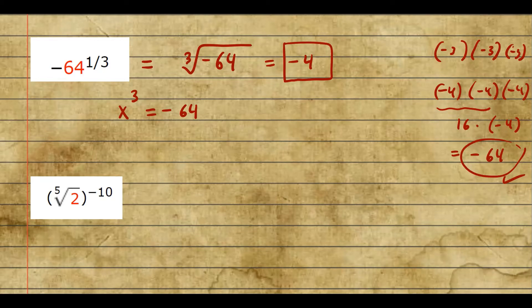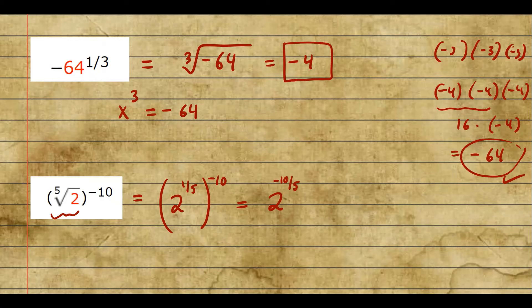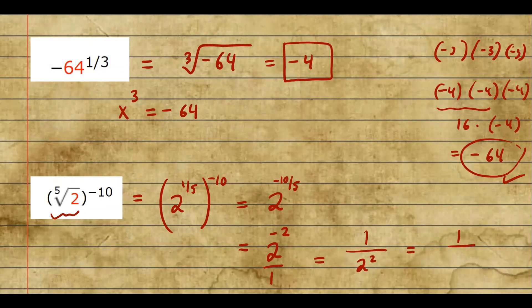For the next example, we simplify before evaluating. We rewrite it in exponential form as 2 to the power one-fifth, all raised to the power negative 10. Using the laws of exponents — when a power is raised to a power, multiply the exponents — this becomes 2 to the power negative 10 over 5, which simplifies to 2 to the negative 2. To make the exponent positive, we reciprocate: 1 over 2 to the positive 2, which is 1 over 4.